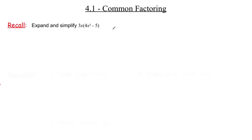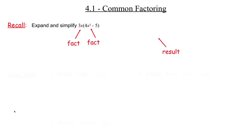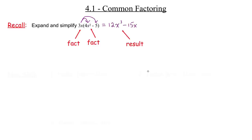Let's do a recall and expand and simplify what we have. We have 3x times the bracket (4x² minus 5). Using the distributive property: 3x times 4x² gives 12x³, and 3x times negative 5 gives negative 15x. So our result is 12x³ minus 15x. That's expanding and simplifying — the distributive property.